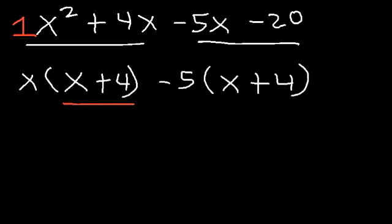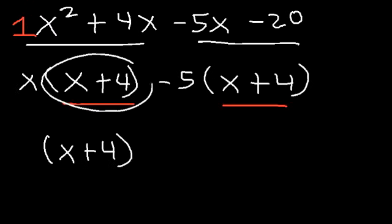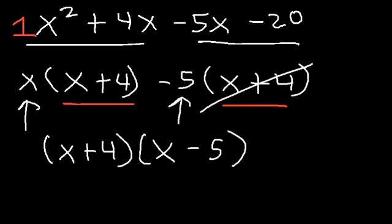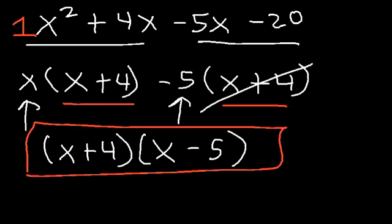Negative 5x divided by negative 5 is x, and negative 20 divided by negative 5 is positive 4. Notice that we have a common factor x plus 4 — that tells you you're on the right track. Factor out x plus 4: what's left from the first group is x, and from the second is negative 5. So the answer is x plus 4 times x minus 5.